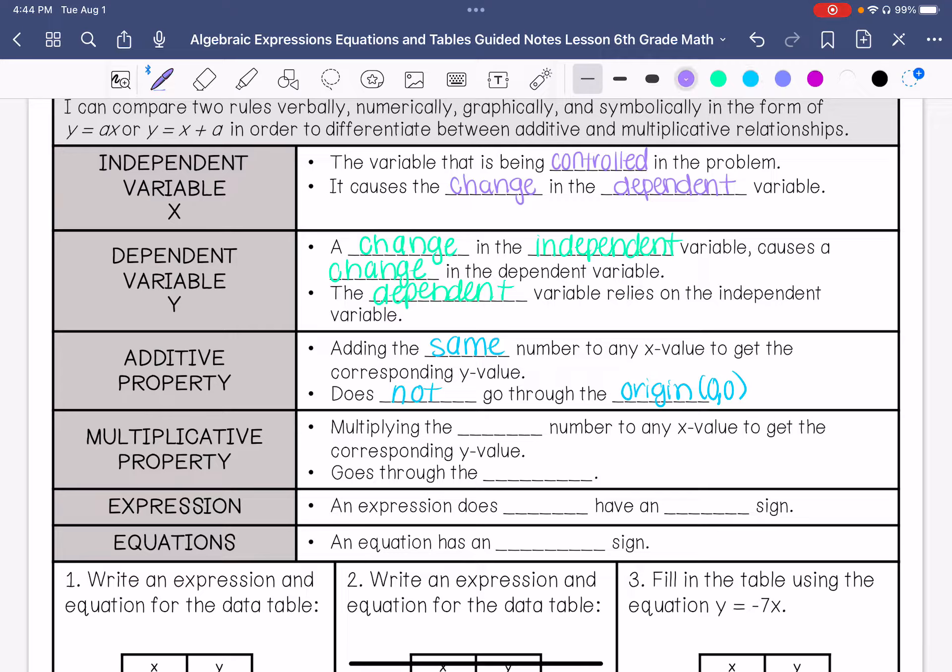When you have multiplicative property, it is multiplying the same number to any x value to get a corresponding y value, and it does go through the origin.